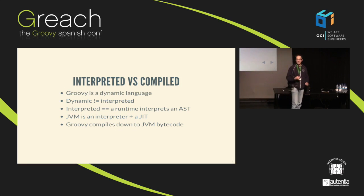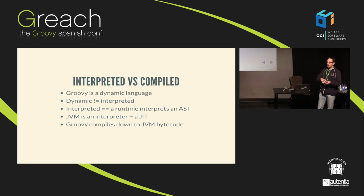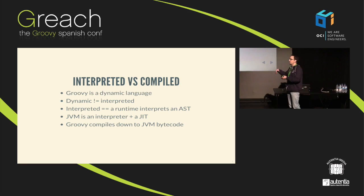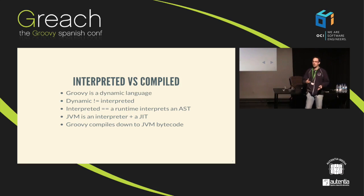First, what is Groovy? Groovy is not an interpreted language — it is a compiled language. What does it mean to be a compiled language? It means that all you have is processed before it is executed. Some languages are totally interpreted — you just parse the text and execute. With Groovy it's basically the same as Java: it is compiled, and that has importance, because for a long time people said Groovy is slow because it's a scripting language and scripts are not compiled.